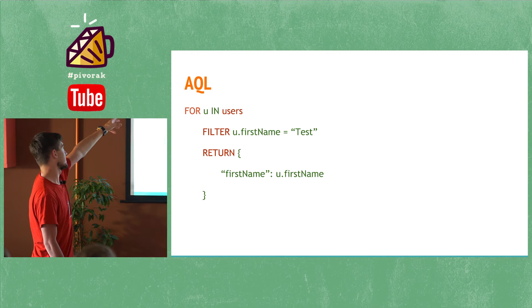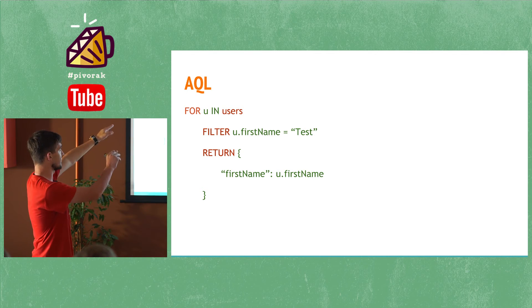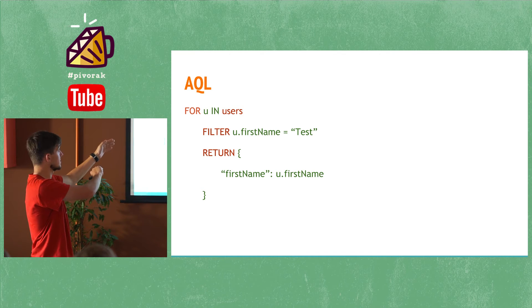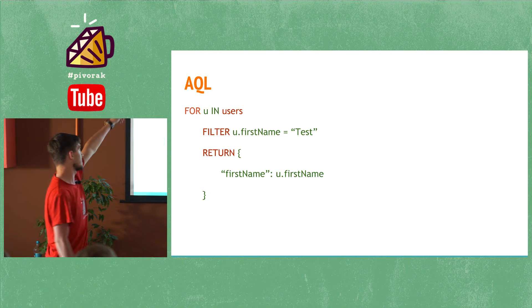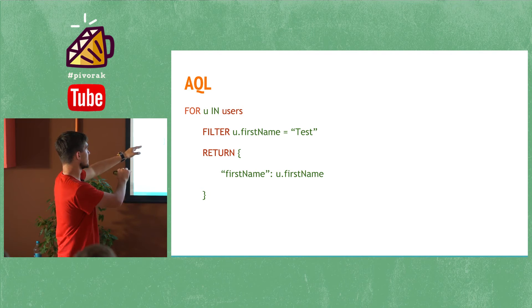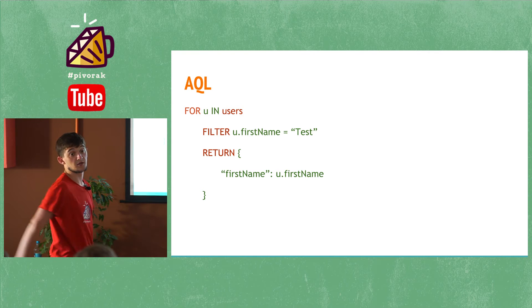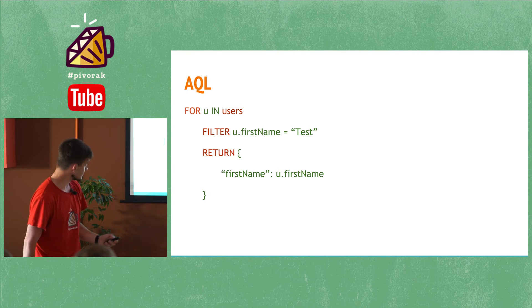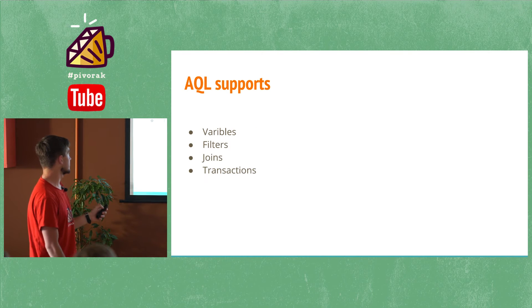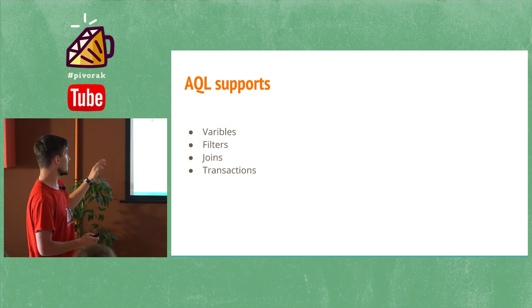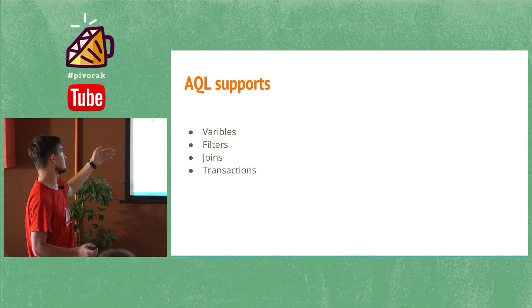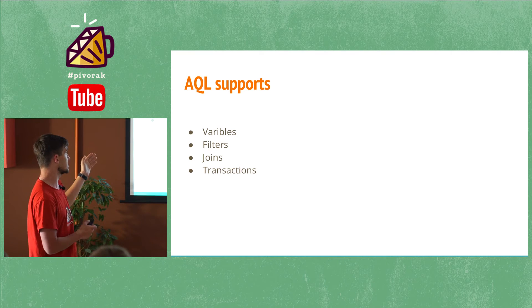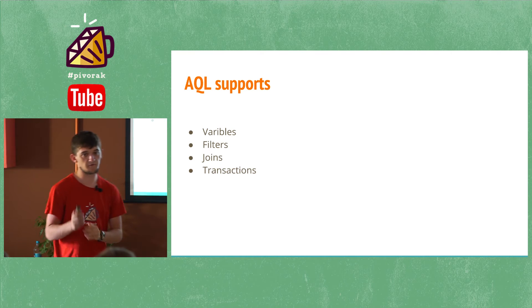For example, in AQL, you iterate over a collection, you can filter, join with other collections, and return the full object or build a custom JSON object. AQL supports creating variables, filtering, joins, and transactions.